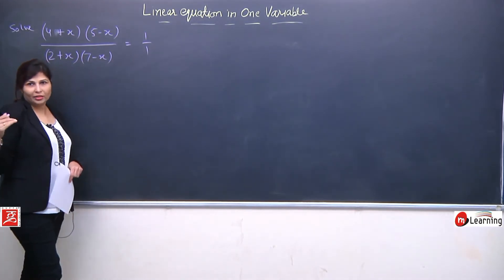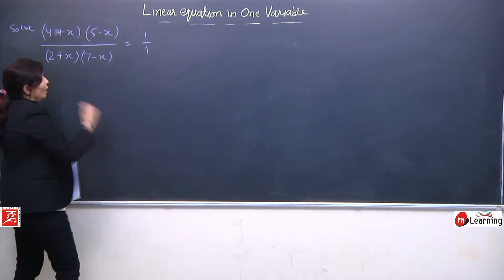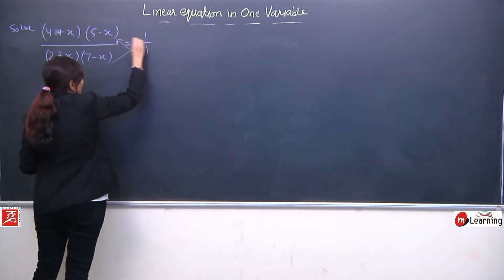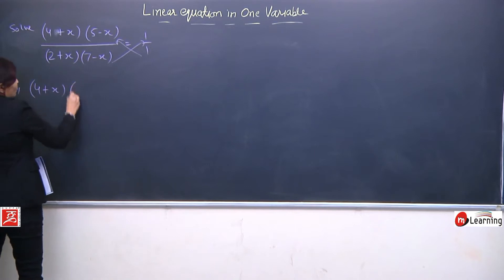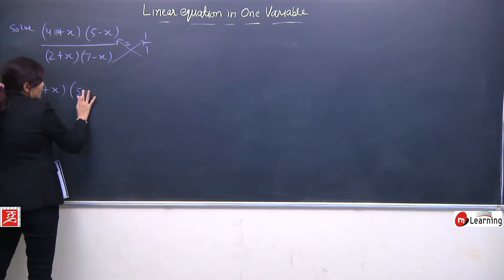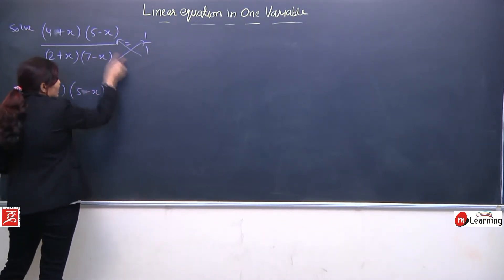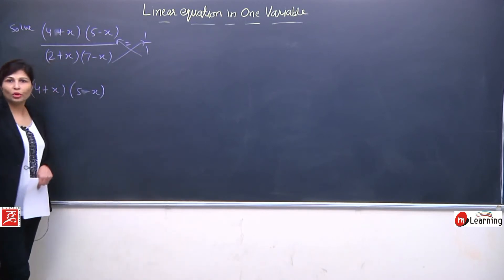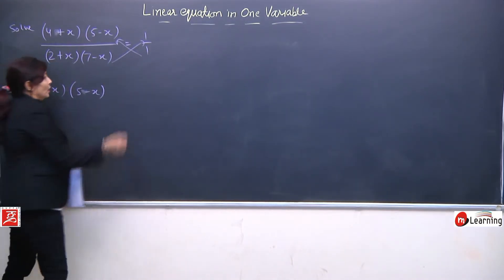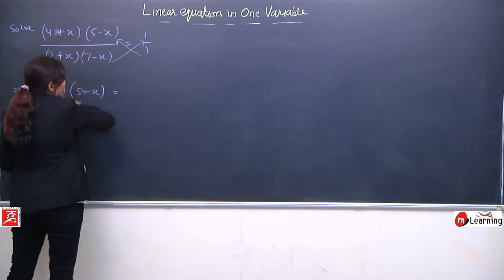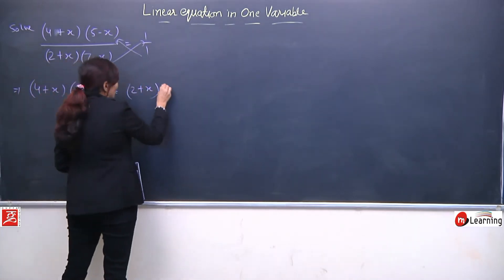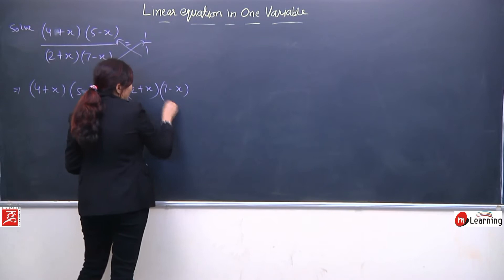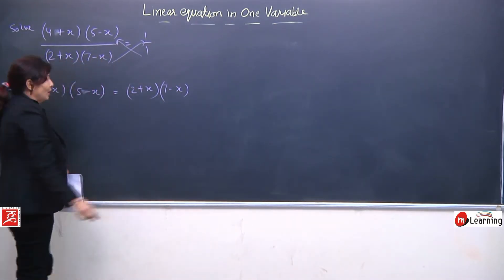Main 1 by 1 — yaha par hame kya karna hai, cross karna hai. So 4 plus x and 5 minus x will be multiplied by 1, so there will be no effect on those terms. Similarly yahan cross ho jayega toh yahan bhi 1 se multiply hoga, so the expression remains as it is.